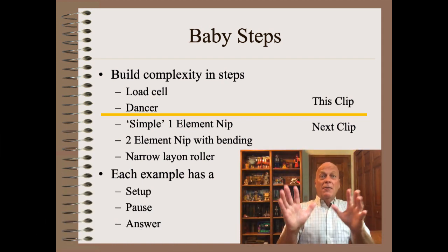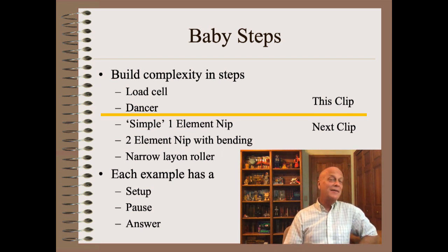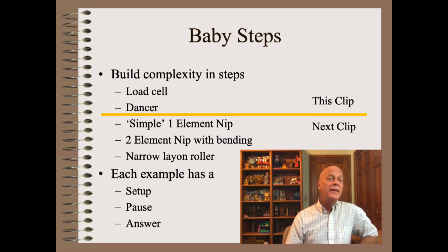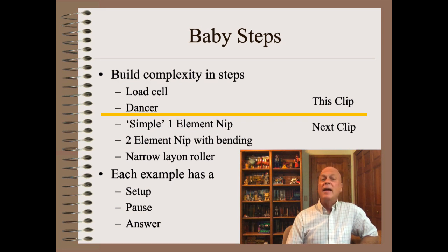However, don't panic! Before we tackle that previous problem, we will start on a much simpler system and build complexity. In this clip, we will start by recalling how to zero a load cell. Then, we will proceed to a dancer that adds the complexity of friction. In the next clip, we will do a simple one-element nip, then a two-element nip with bending, and then a narrow lay-on roller. These cases will cover most every nip and every winding machine you will ever run into.